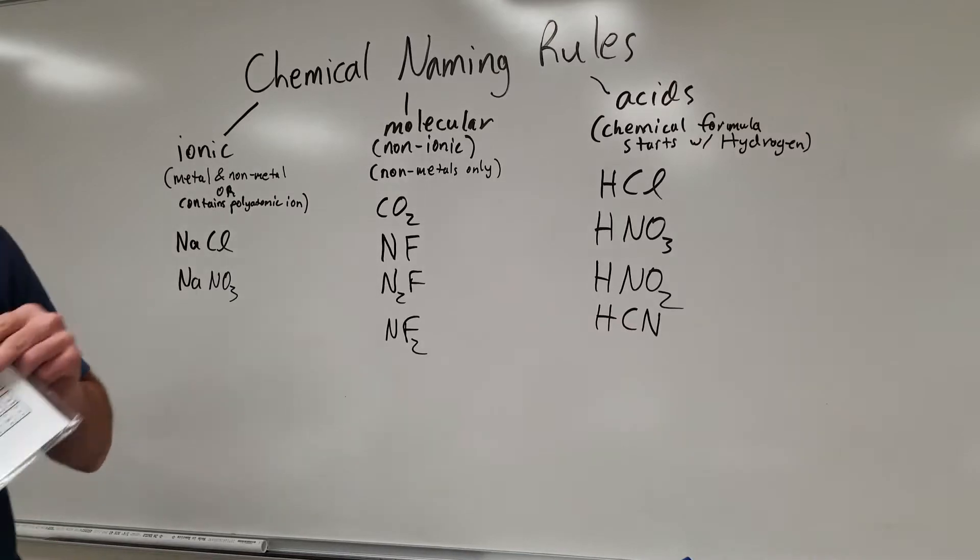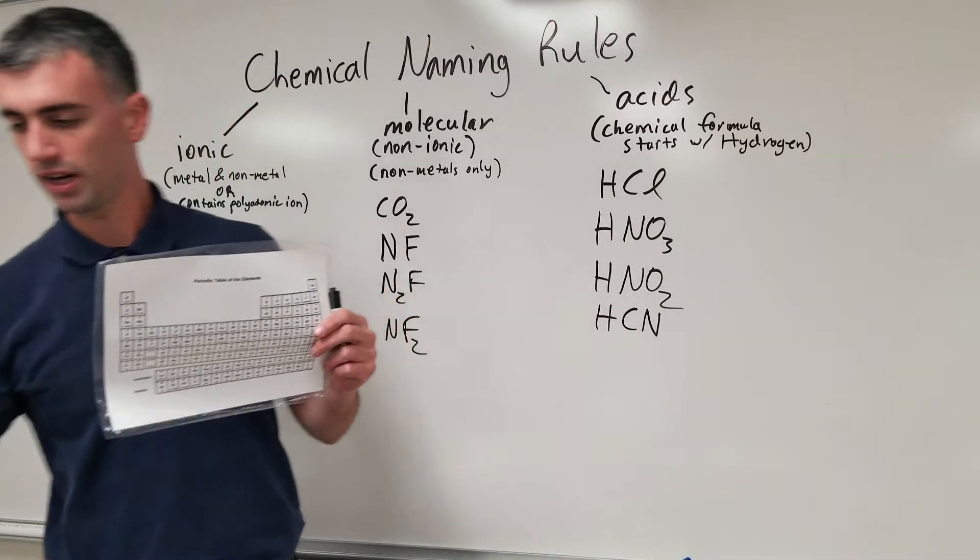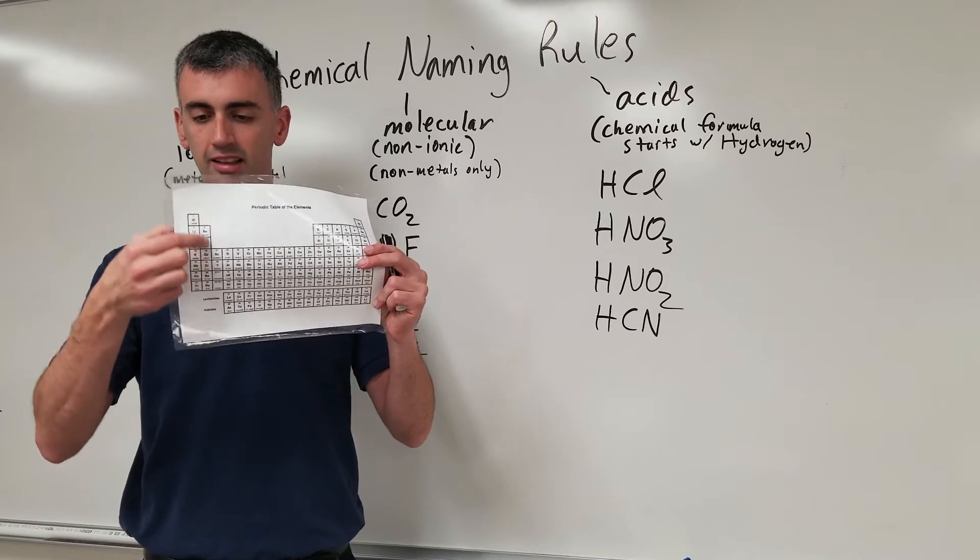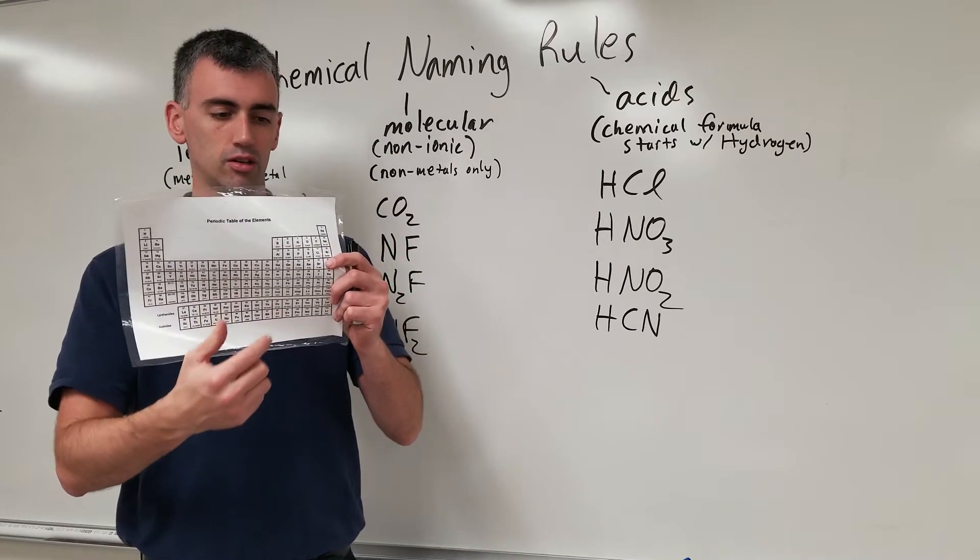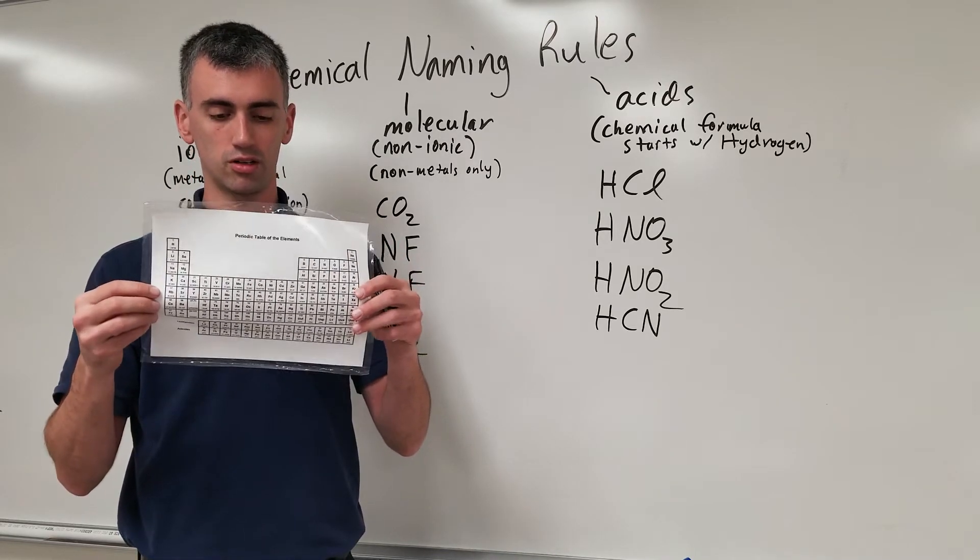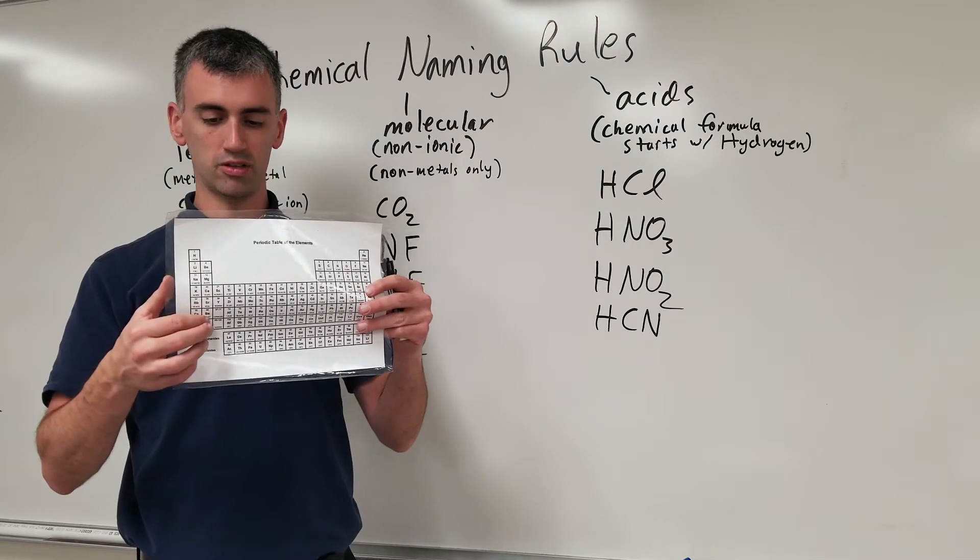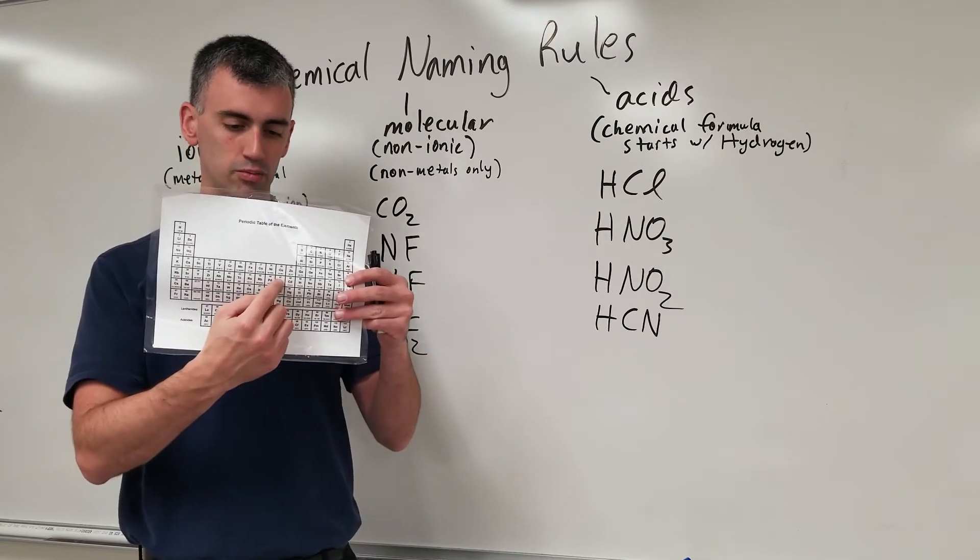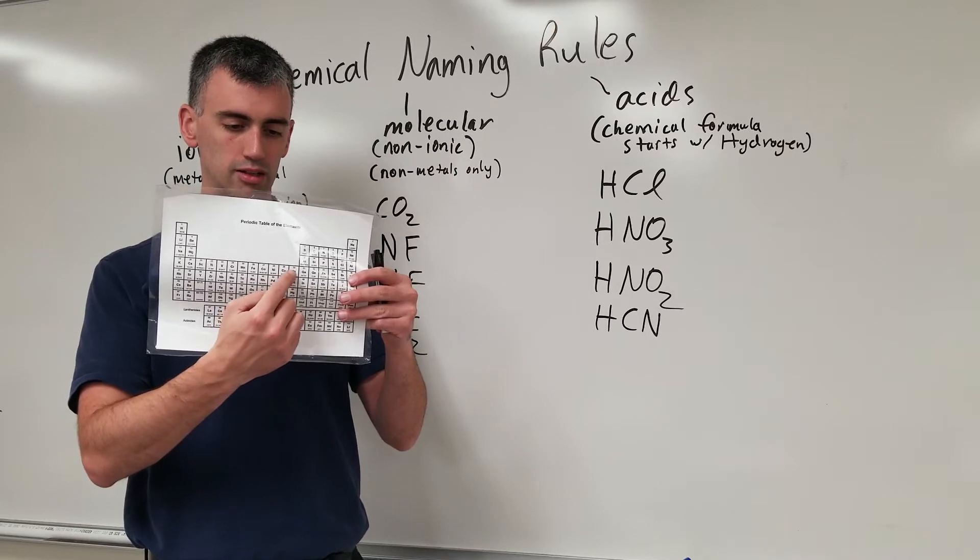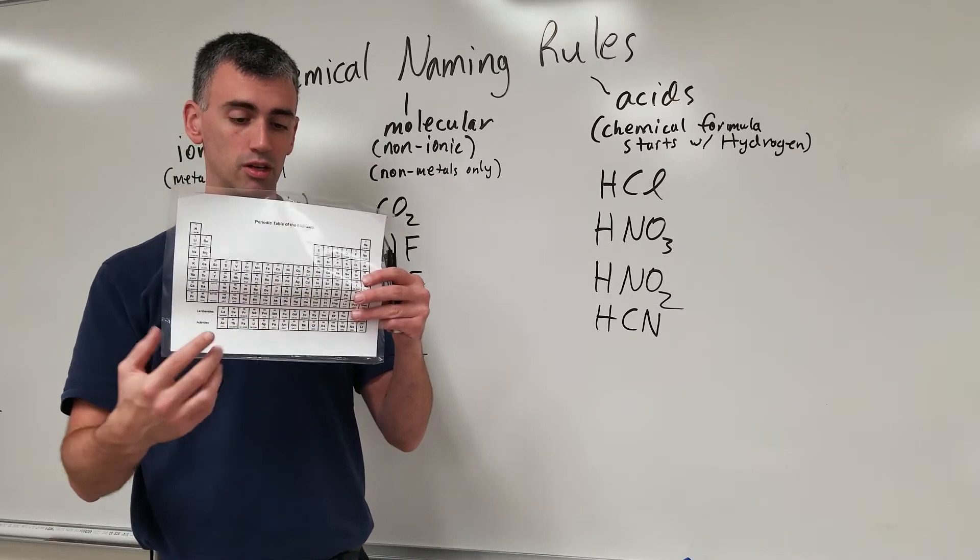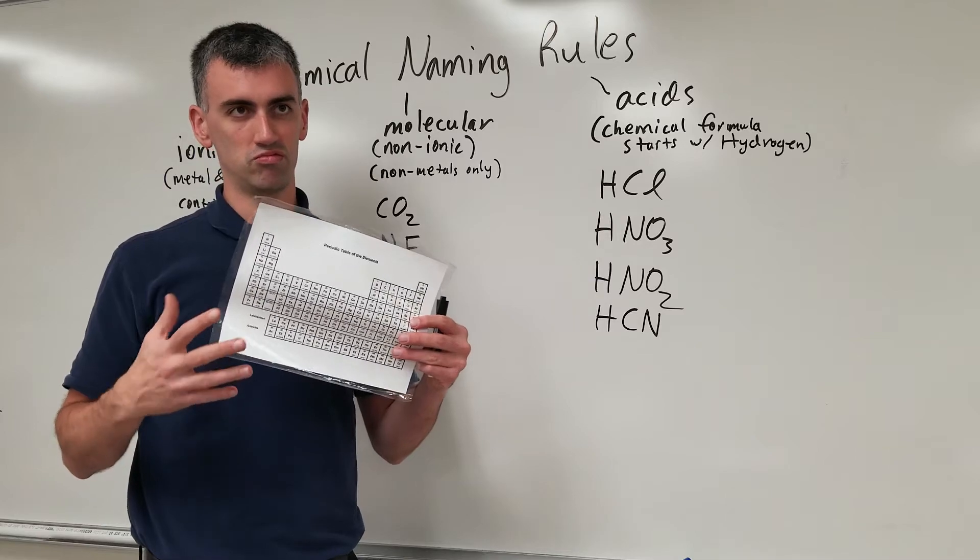When you look at the periodic table, you have certain metals like the alkali and the alkaline earth metals where you know the charge. All the alkali metals are plus one, alkaline earth are all plus two. Silver is a plus one, zinc is a plus two.